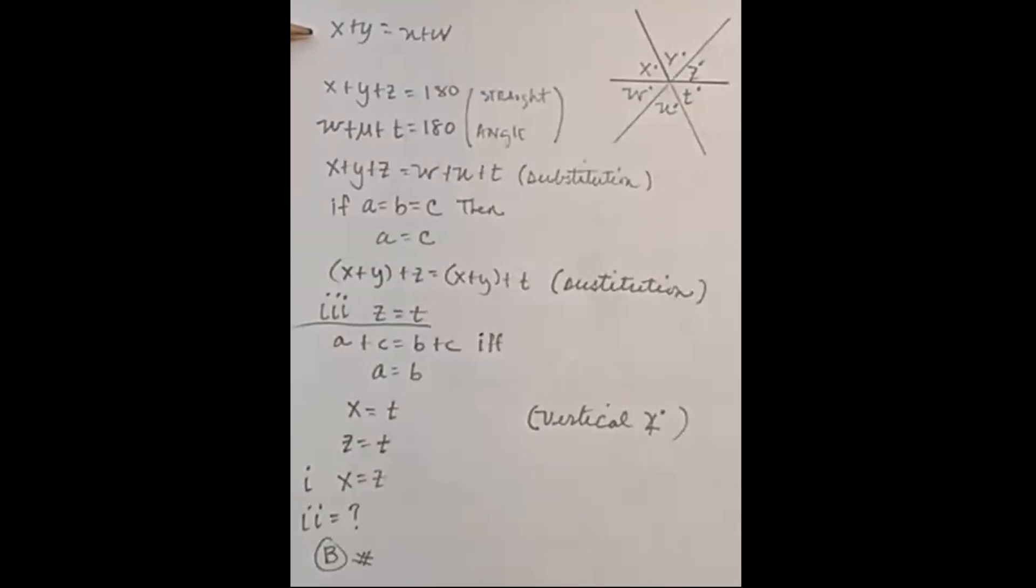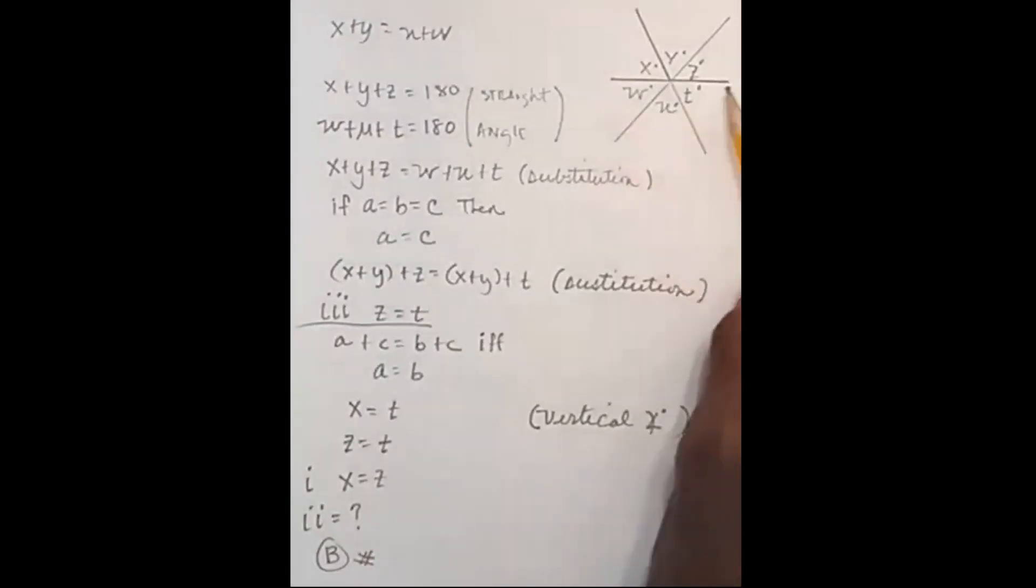X plus Y equals U plus W. W plus U plus T equals a straight angle, which is 180. Same for these top three: X plus Y plus C. We're going to use those facts to solve this problem.